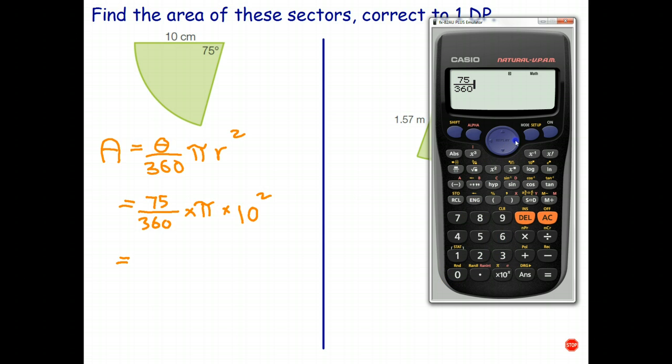Over 360, right arrow, multiplied by, now there's my pi button in yellow so I need shift and pi, multiplied by.